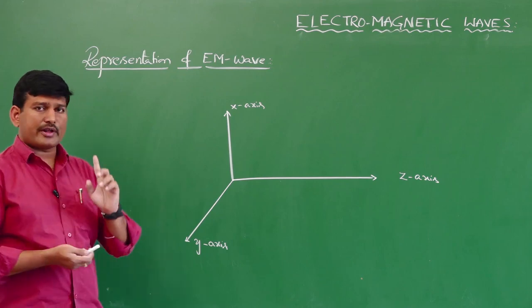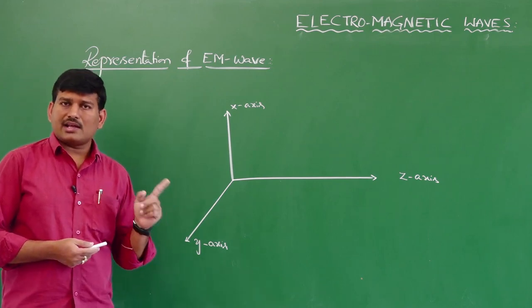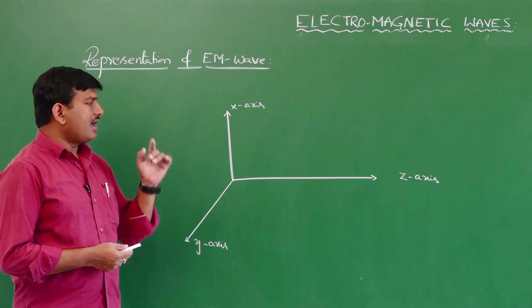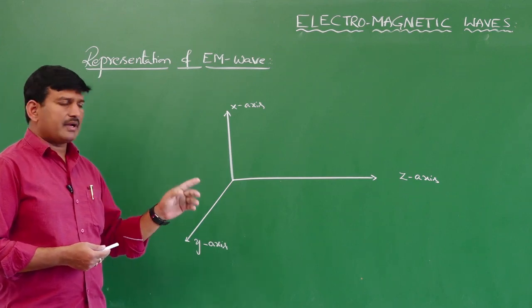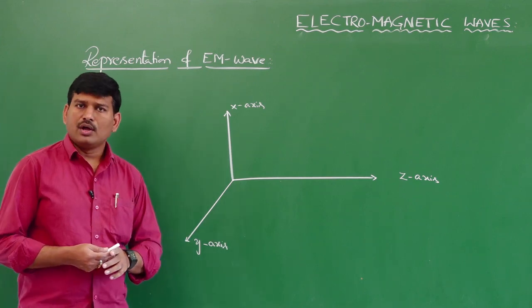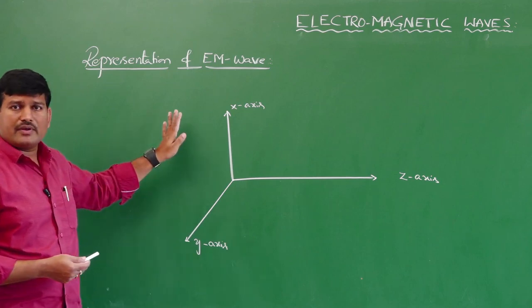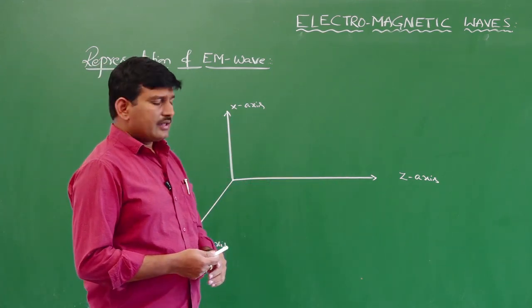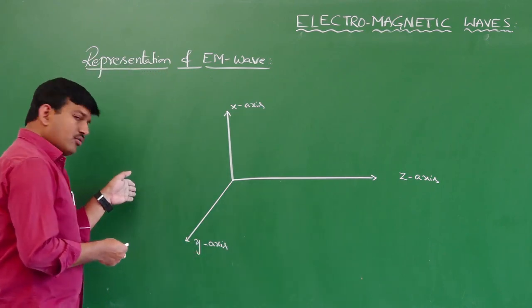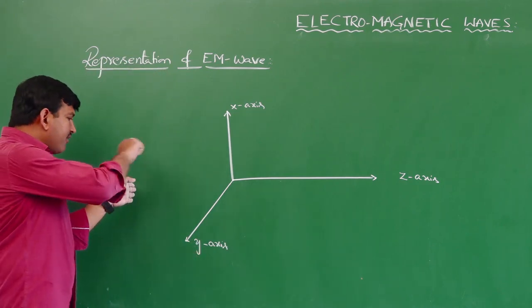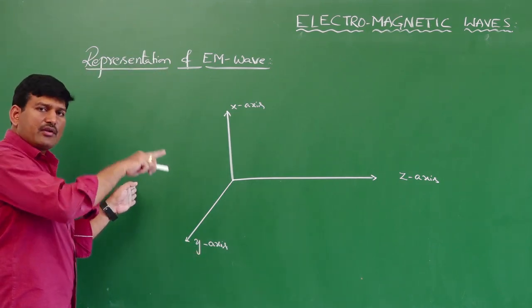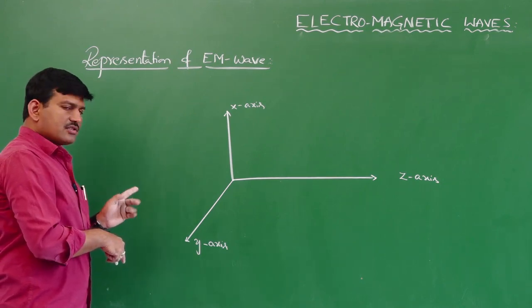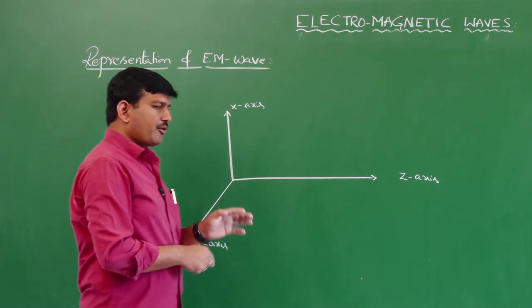In an electromagnetic wave, according to Maxwell, the electrical vector and magnetic vector must be perpendicular to each other, and the motion must be perpendicular to the direction of propagation of the wave. As shown even in the capacitor case when studying displacement current — the electric field goes into the board and the magnetic field lies in the plane of the board in a circular pattern, meaning they are perpendicular to each other and also perpendicular to the direction of propagation.